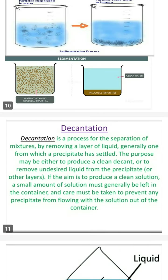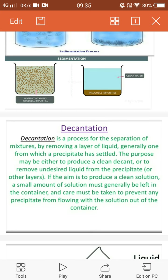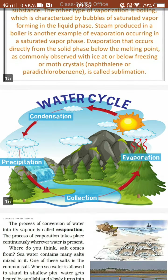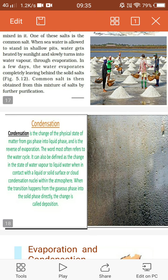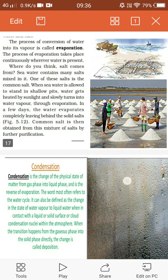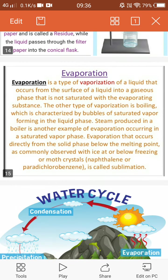When you are cooking something and you cover the utensils, you will see droplets form on the lid. Those droplets, when removed, change into liquid form — that is water. This is called condensation.